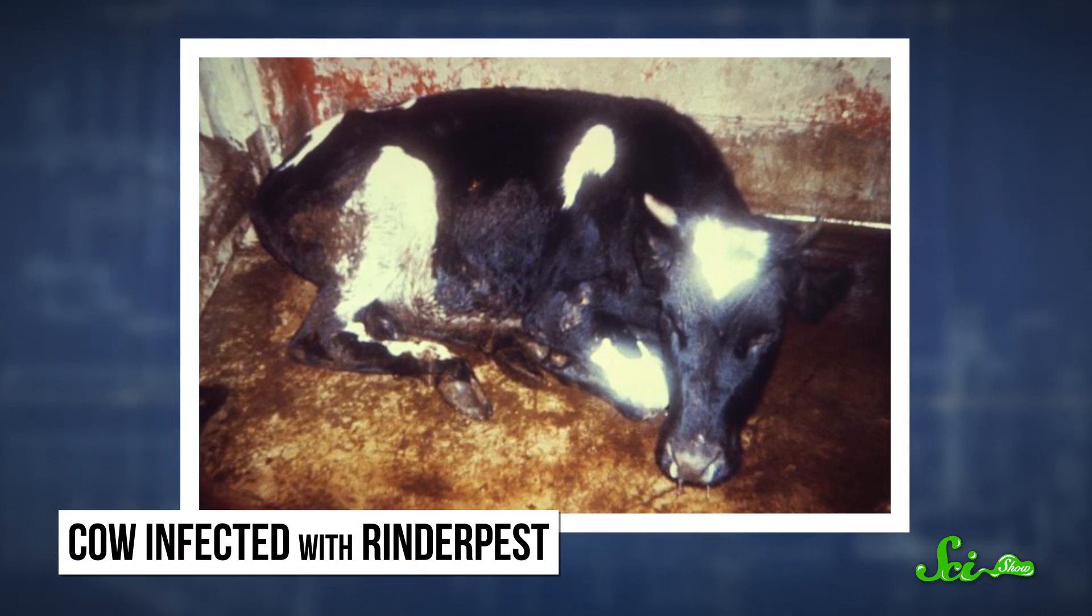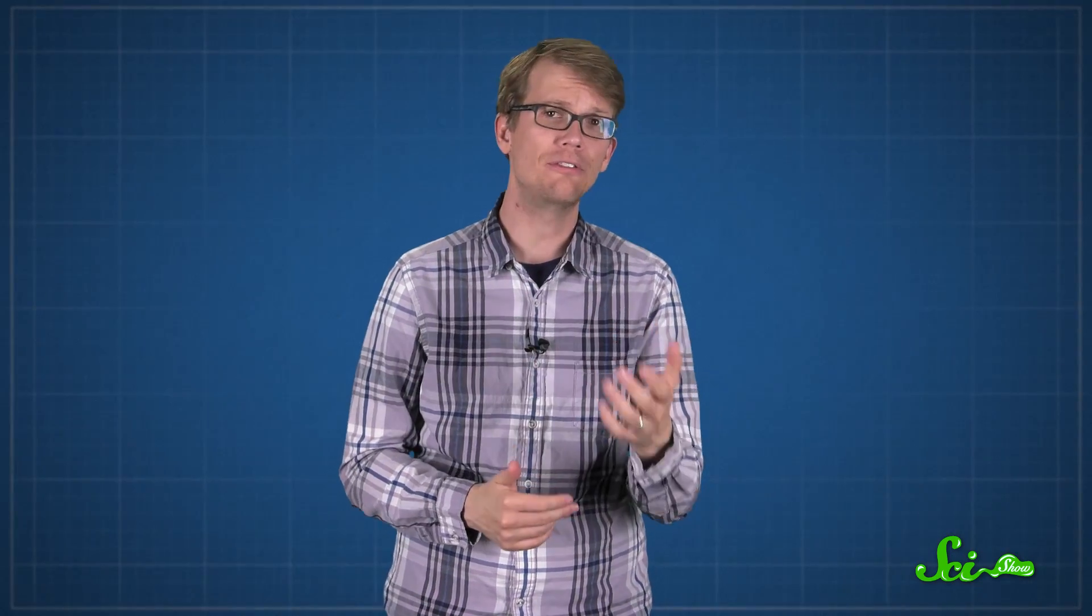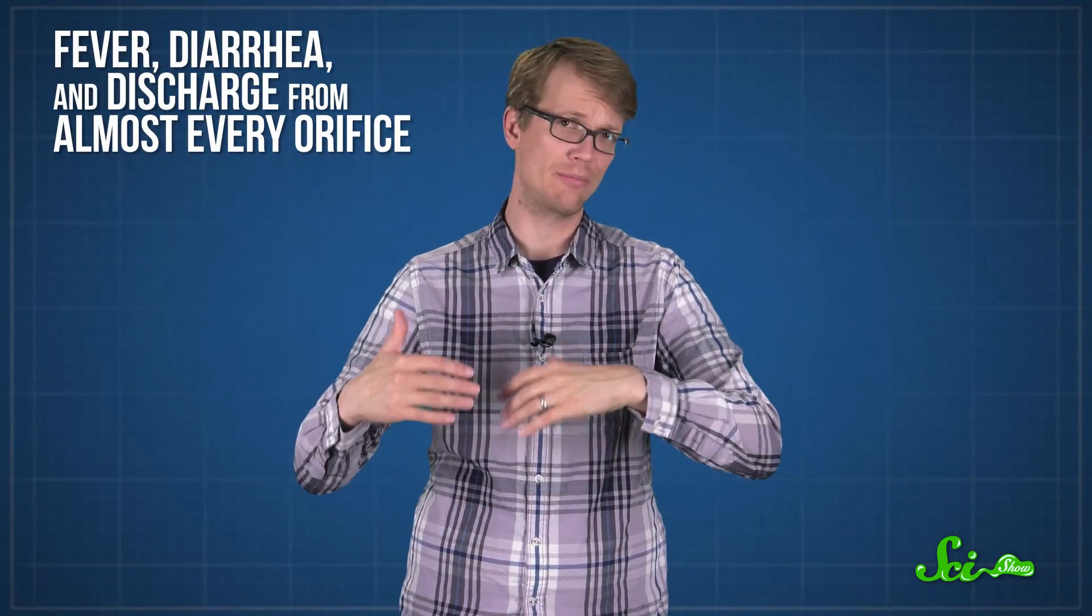Rinderpest was a nasty livestock disease. Infected cattle had a high chance of dying, suffering from a mix of fever, diarrhea, and discharge from almost every orifice. All of those bodily fluids helped the virus spread, and it really spread.